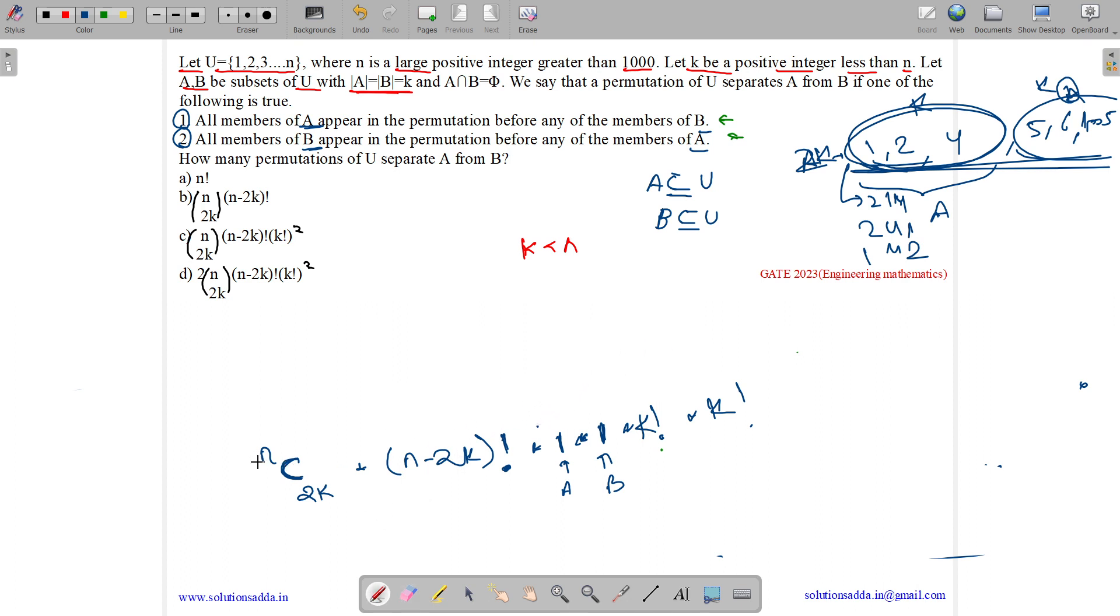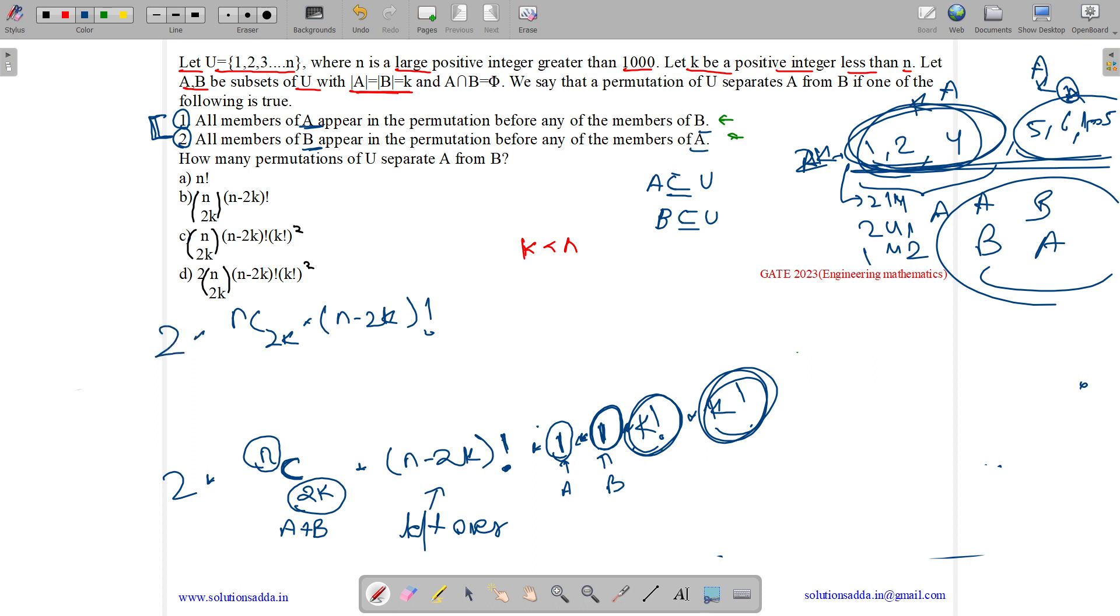We need to select 2k items from total n items for A as well as B. Leftover items can be permitted in any number of ways. They do not have any restriction. Now A is the first k part and the second k part is B. So we got nC2k into n minus 2k factorial. A can be permitted in k factorial and B can be permitted in k factorial. This first and second condition can be used interchangeably, which means we can have A, B or B, A. So we will have two possibilities. It is 2 into nC2k into n minus 2k factorial into k factorial into k factorial, which can be written as k factorial whole square.